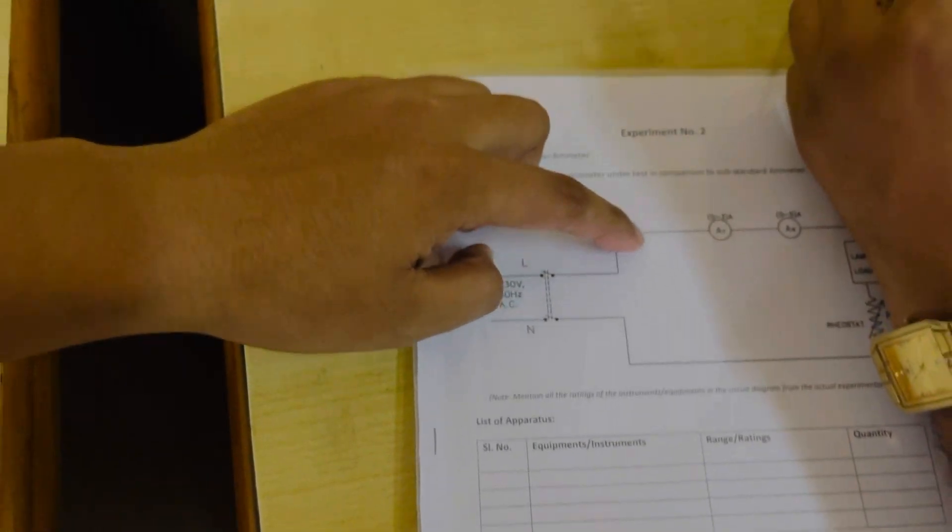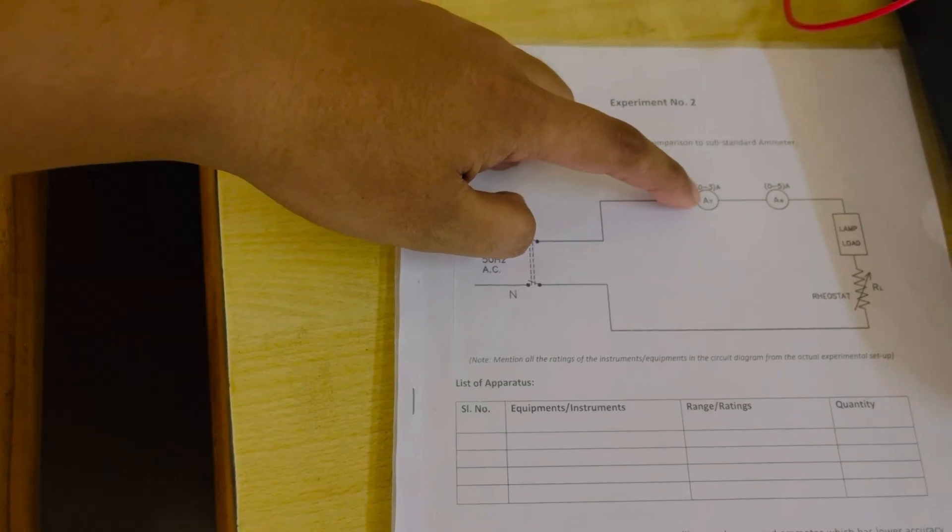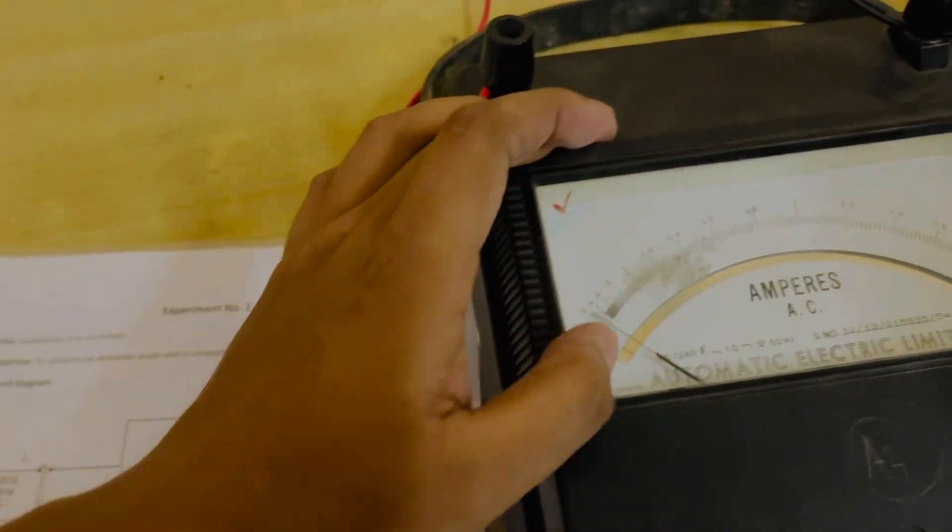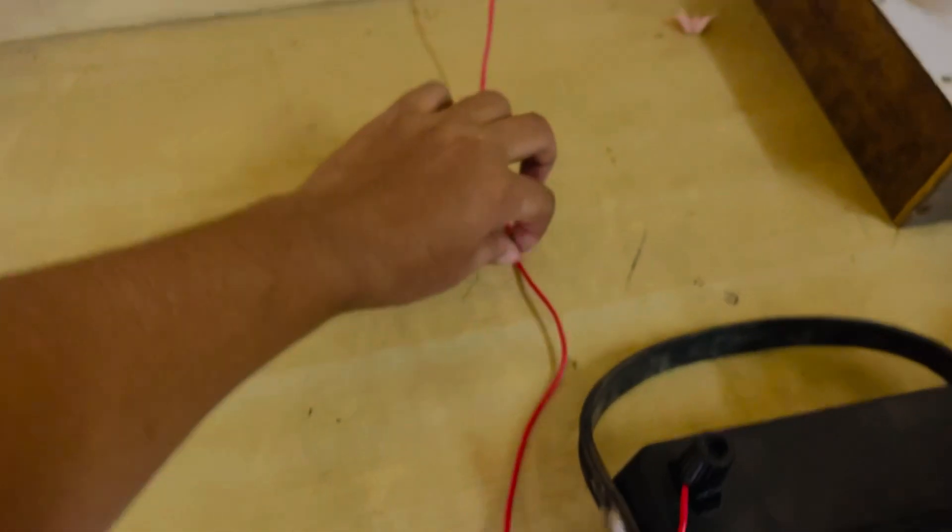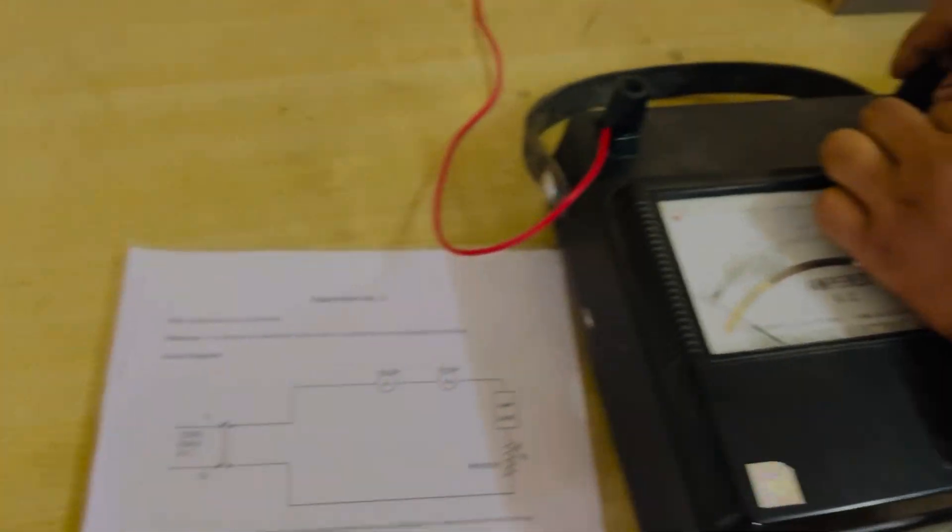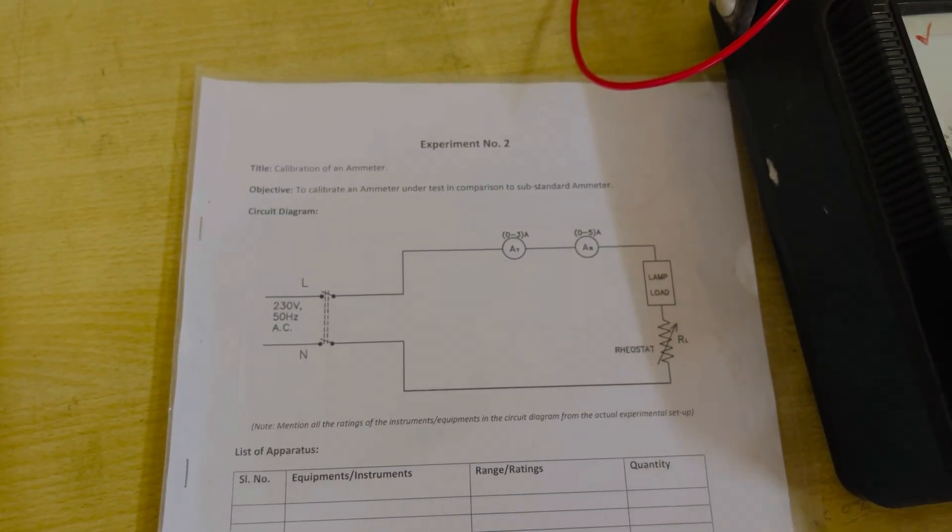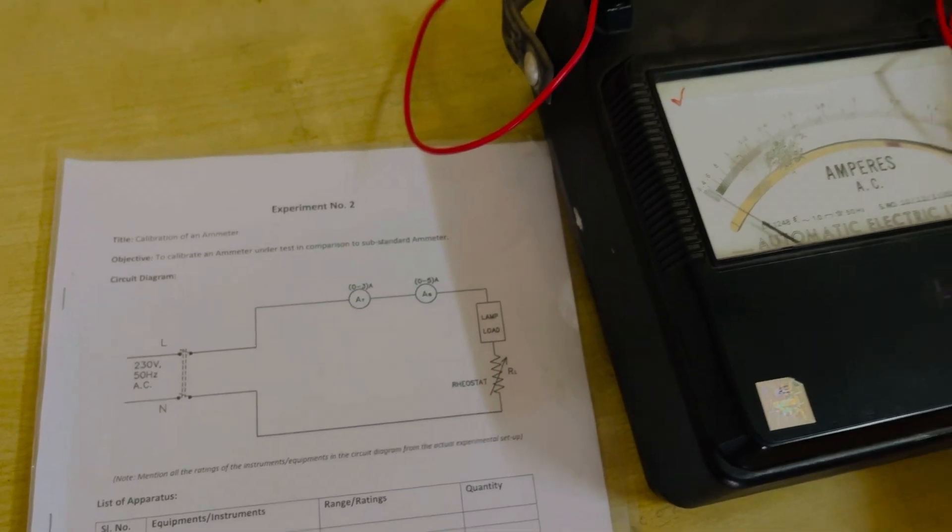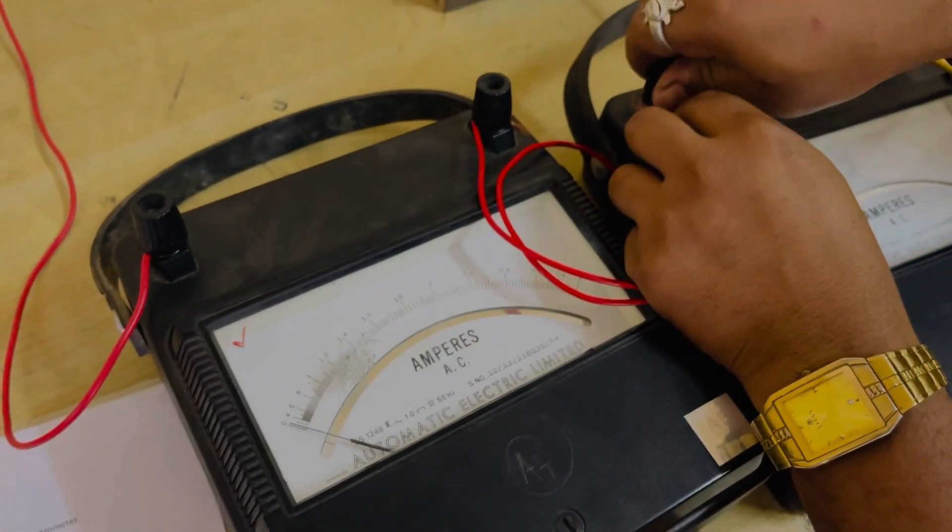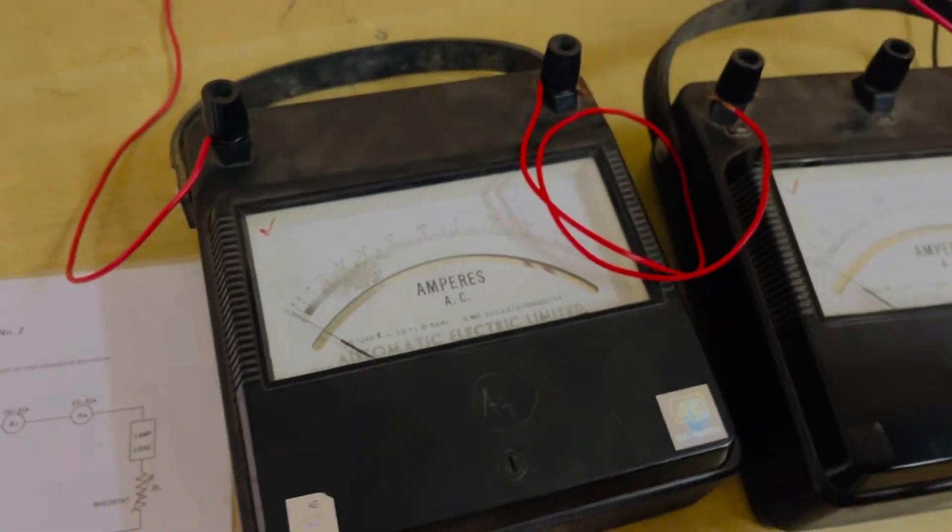From supply to the first ammeter, 0 to 3 amps. This is the value of 0 to 3 amps. Then the output of this 0 to 3 amp ammeter is connected to the second ammeter, which is 0 to 5 amps, at the common point.